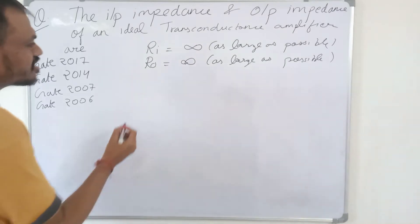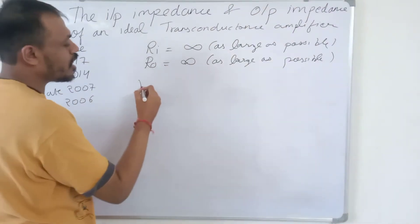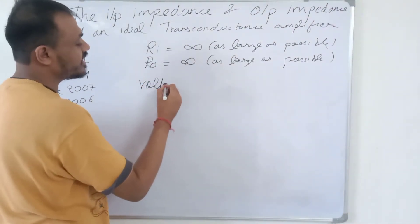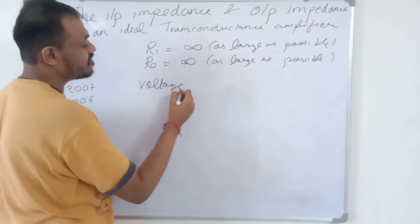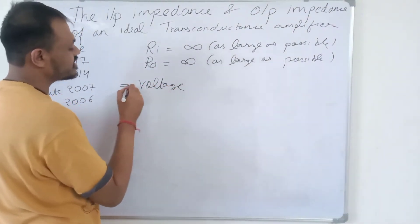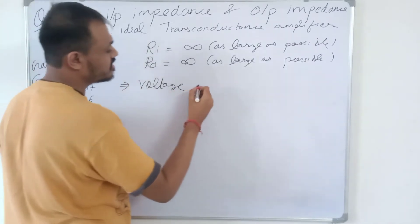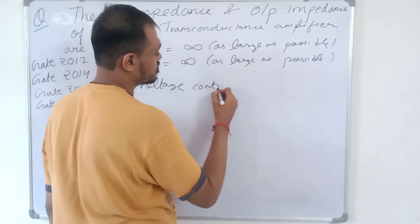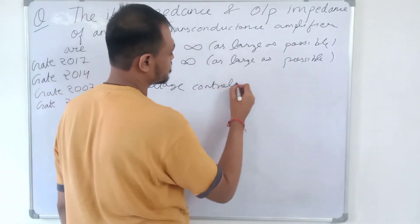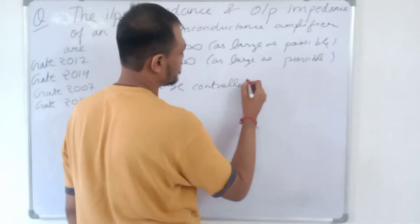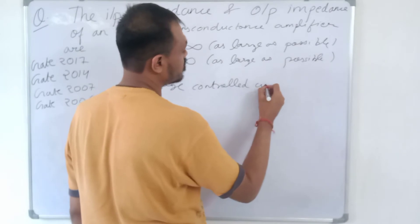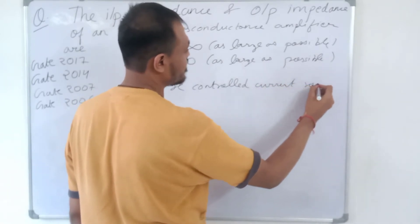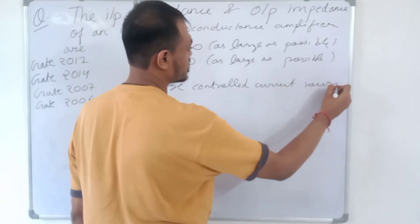A Transconductance Amplifier is also called a Voltage Controlled Current Source amplifier, or VCCS.